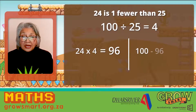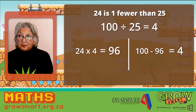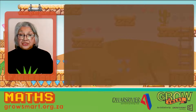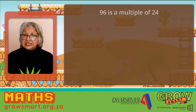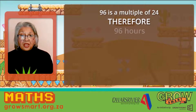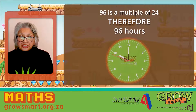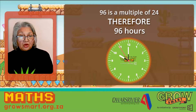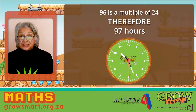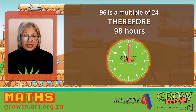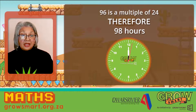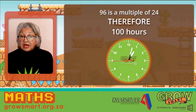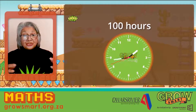100 minus 96 is equal to 4. So let's see what we can do now. 96 is a multiple of 24. Therefore, 96 hours will take us to 10 o'clock. All we have to do now is add on from 10 o'clock. 97 will take us to 11 o'clock, 98 will take us to 12 o'clock, 99 will take us to 1 o'clock, and 100 hours will bring us to 2 o'clock.